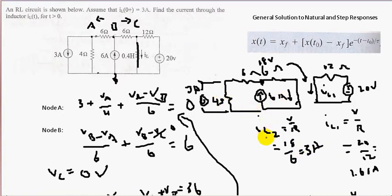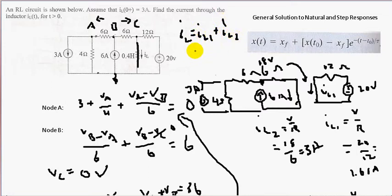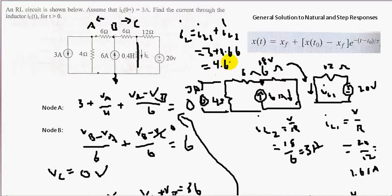Now we need to add IL equals IL1 plus IL2. So we have 3 plus 1.66, which gives us 4.66 amps. That's our final current — the same as what we had last time.